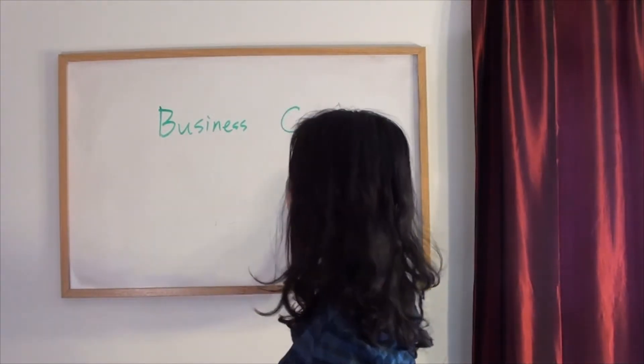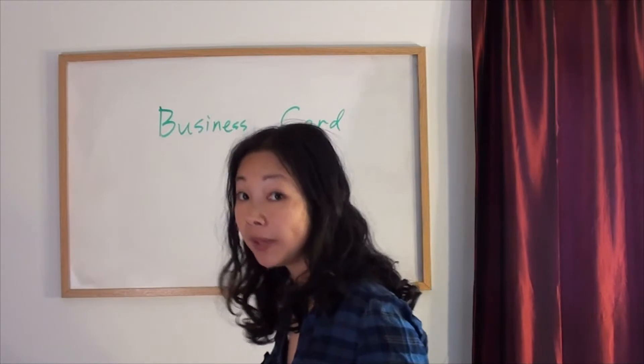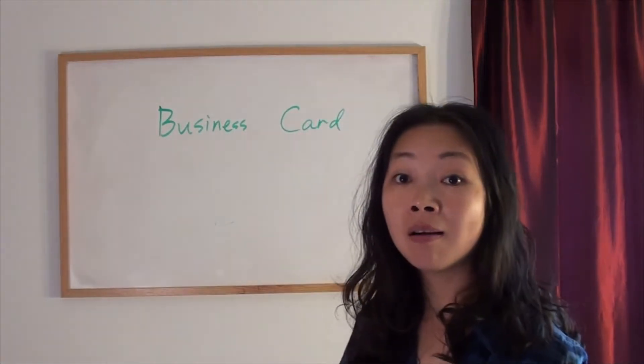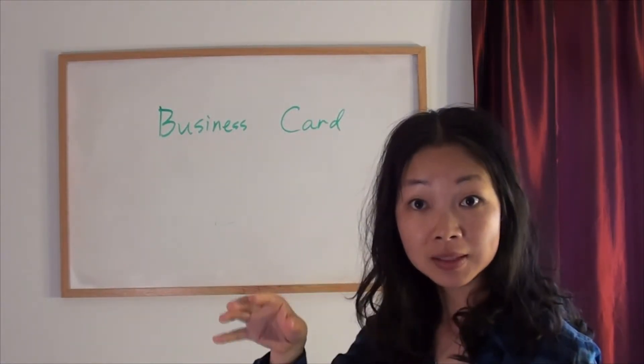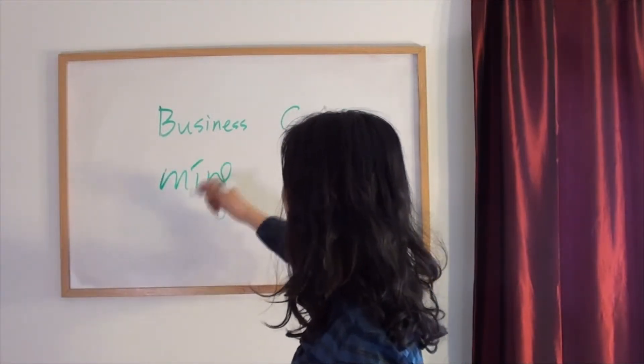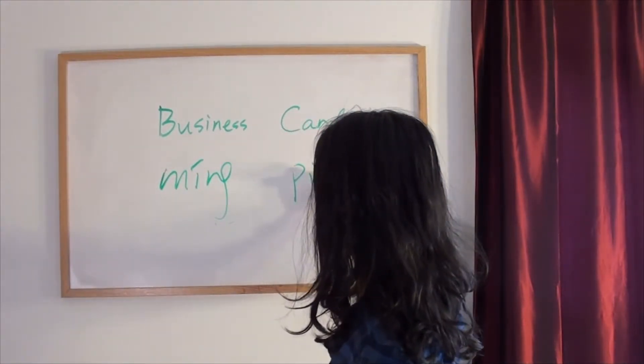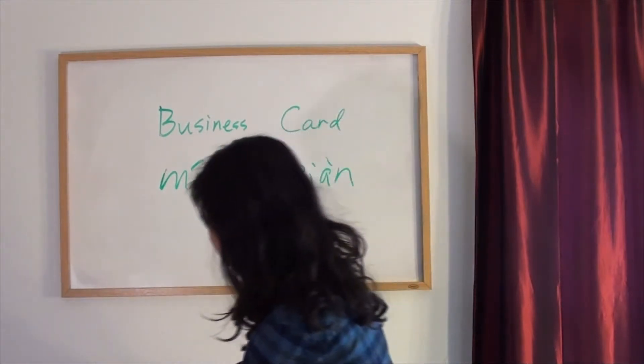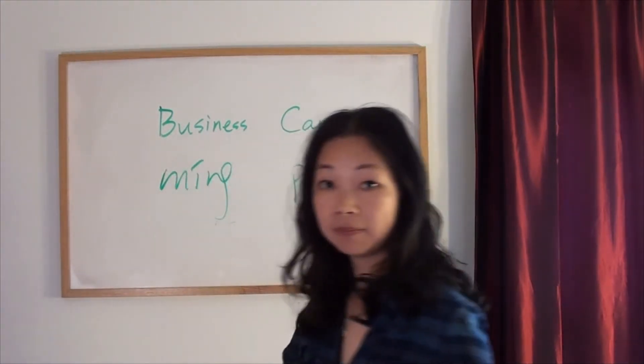Listen carefully: 名片. 名 is part of 名字. 名字, 名. 片. 片, 名片, 名片.